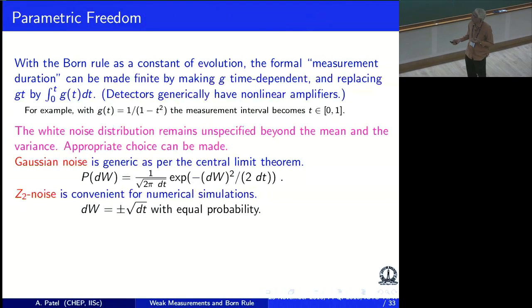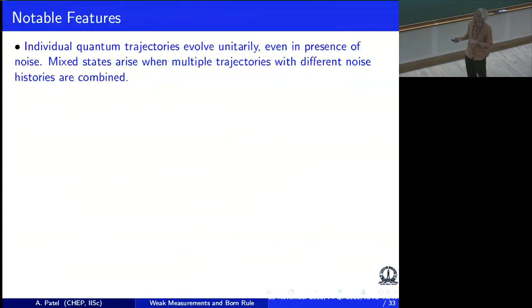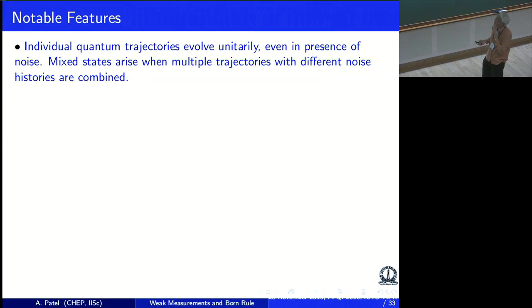One can actually simplify the analytic work a lot because whatever appears in the equation is only the second moment of the noise. The Gaussian noise can be replaced by what is called a ℤ₂ noise, where the noise takes only values ±1 — all that matters is the second moment, and one can calculate more easily. You can also write all this in a Kraus decomposition form. Let me summarize all the features of this diffusion process.